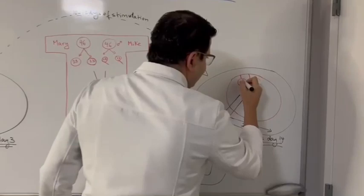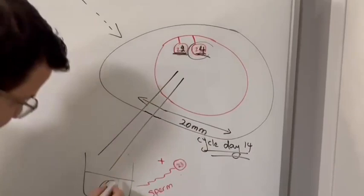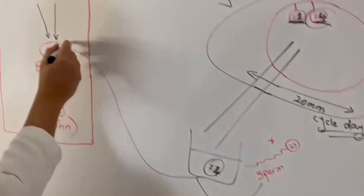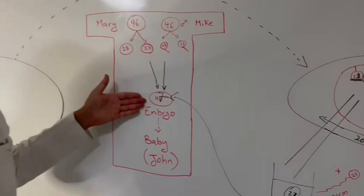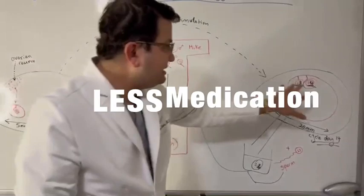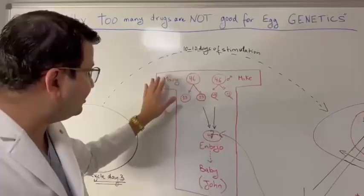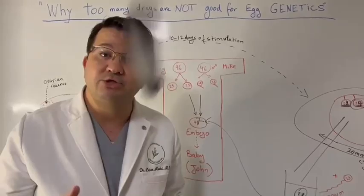And instead of 23 and 23, it's going to be 22 and 24. If the 24 comes here with the 23 chromosomes, instead of giving 46, it's going to give 47 chromosome embryo, which ends up with Down syndrome or abnormal embryo. So less medication seems to have a better division of the egg into two equal 23 and 23. So Mary, Mike, and I will be extremely happy.